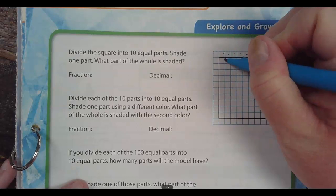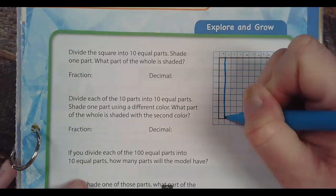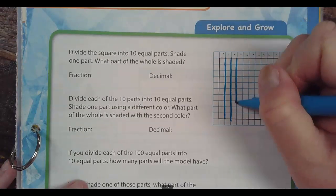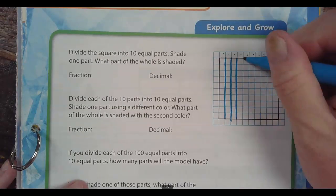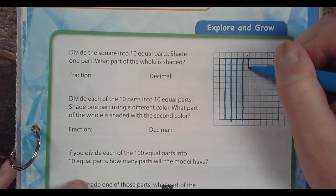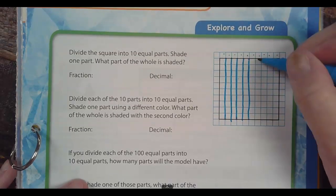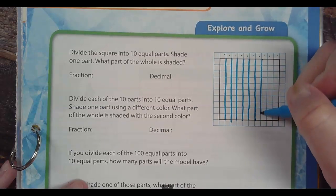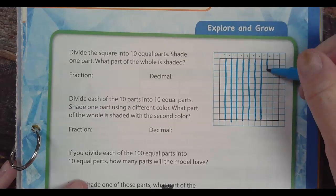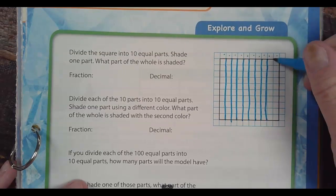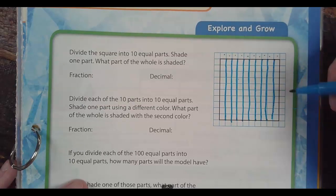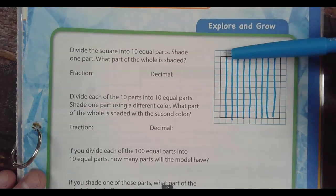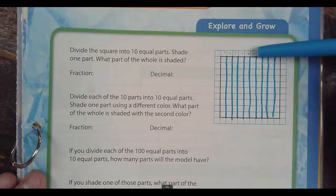So I can just draw down the lines: one, two, three, four, five, six, seven, eight, nine. Now I made nine lines, but there's ten spots, right? One, two, three, four, five, six, seven, eight, nine, ten.